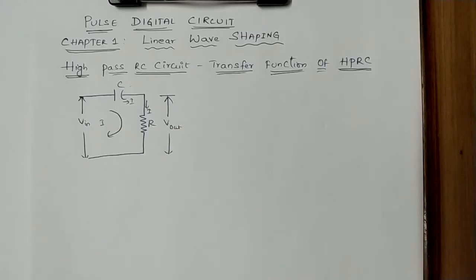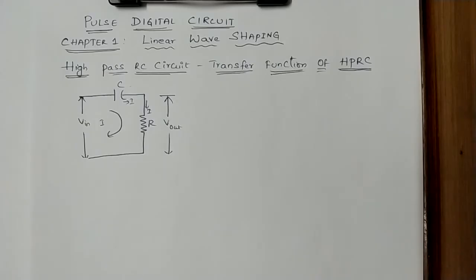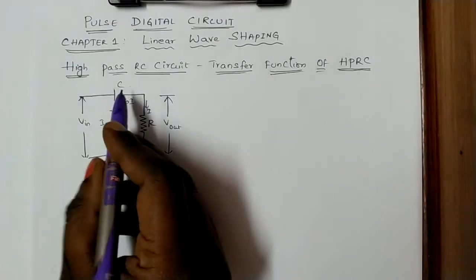For this high pass RC circuit, we are now finding out the transfer function of the HP RC circuit. What is meant by a transfer function? The transfer function is nothing but the output voltage divided by the input voltage. So we have to find out the transfer function of the HP RC circuit.